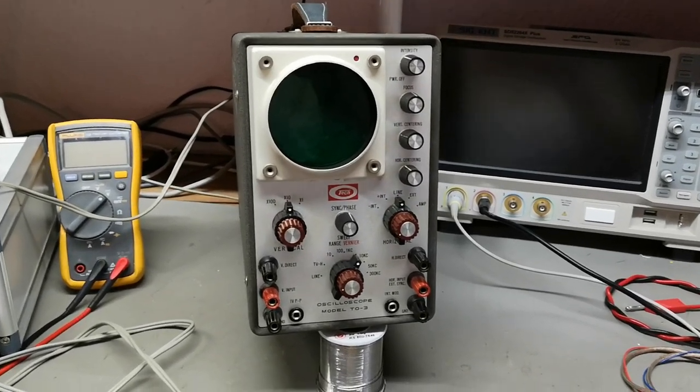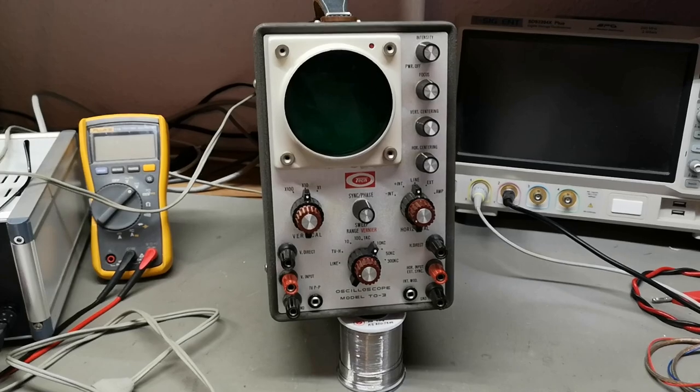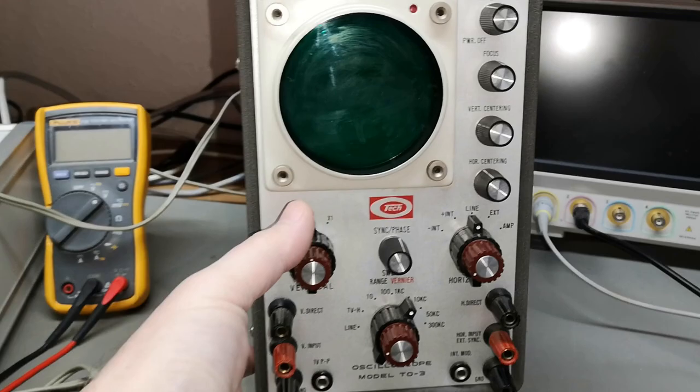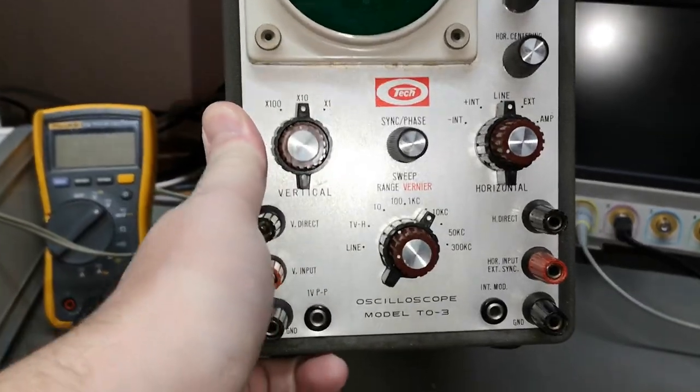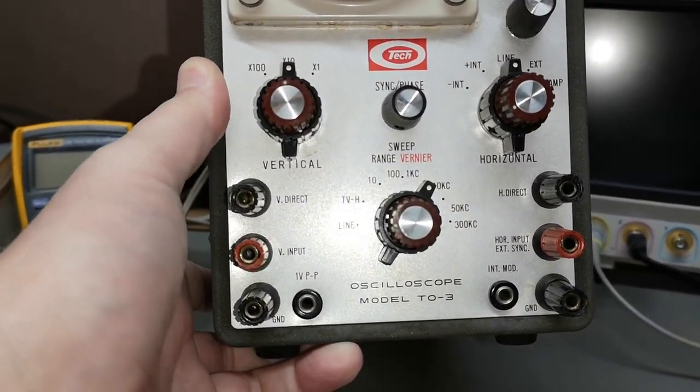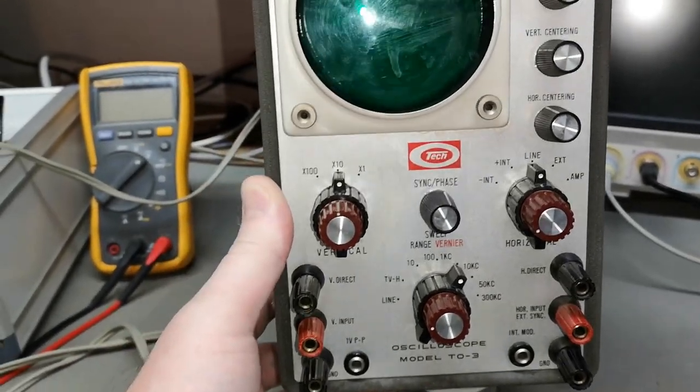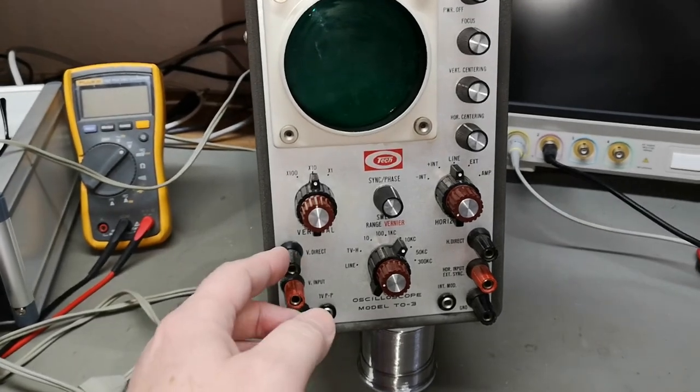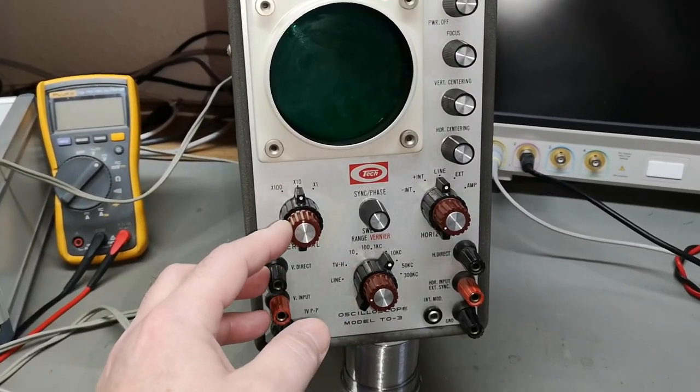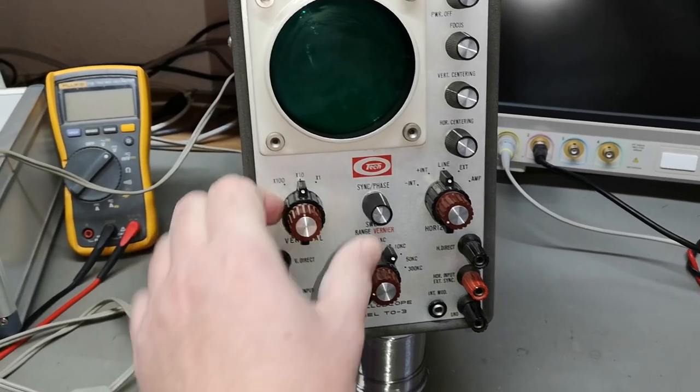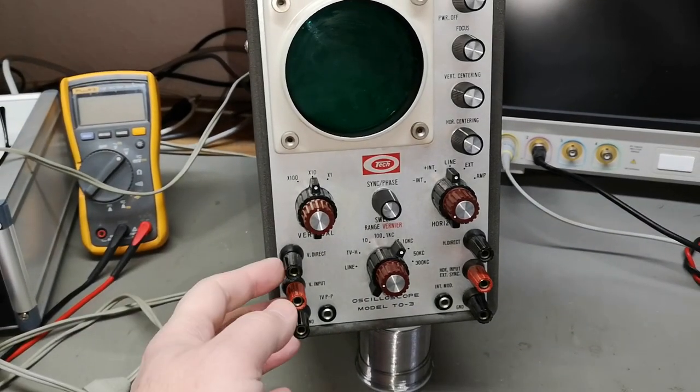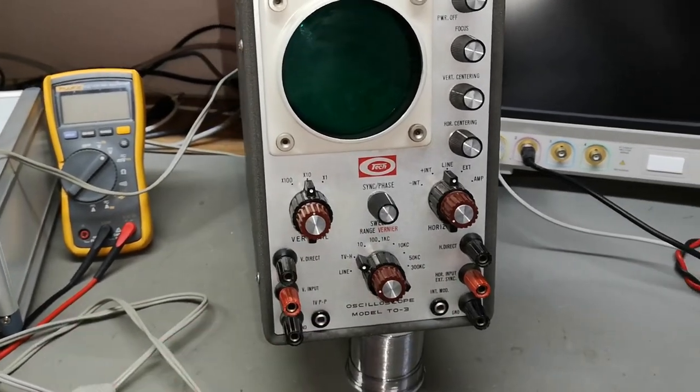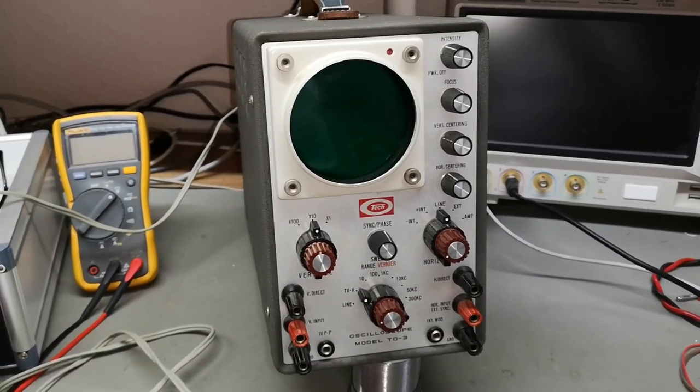Welcome to a new test and teardown video. This time it's another oscilloscope from Tech, model TO-3. It's a one channel oscilloscope and it is tube based, from 1960 something. It isn't really full of features, but I heard that it is not working.